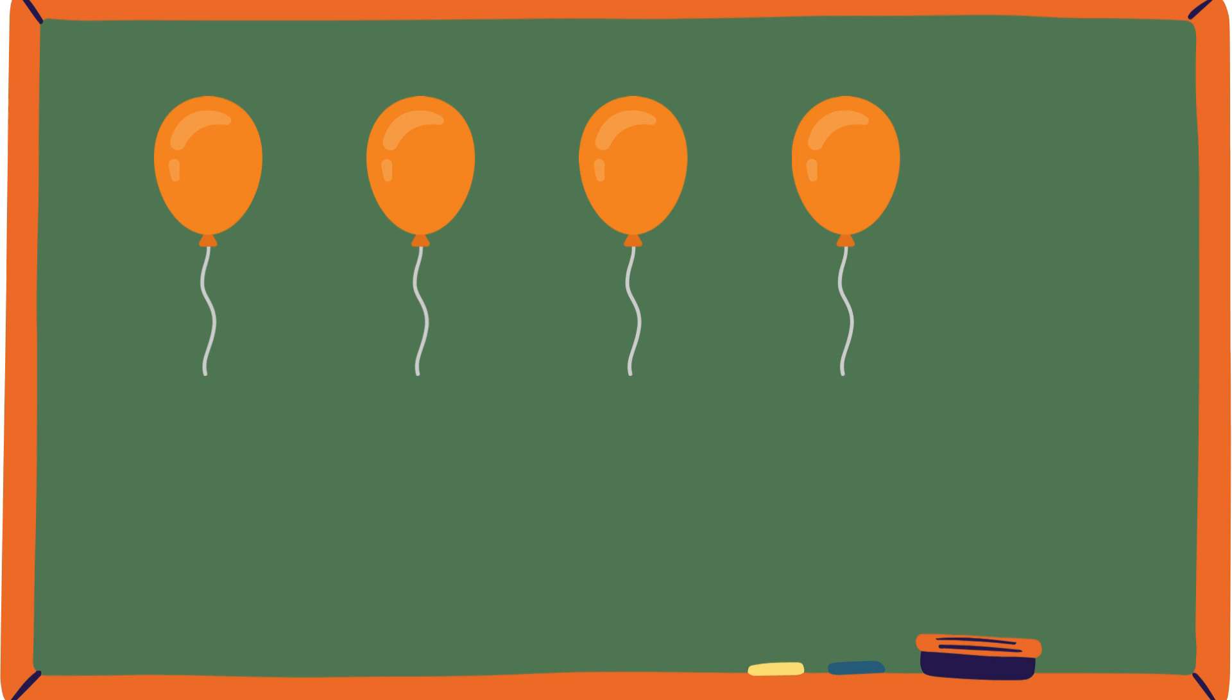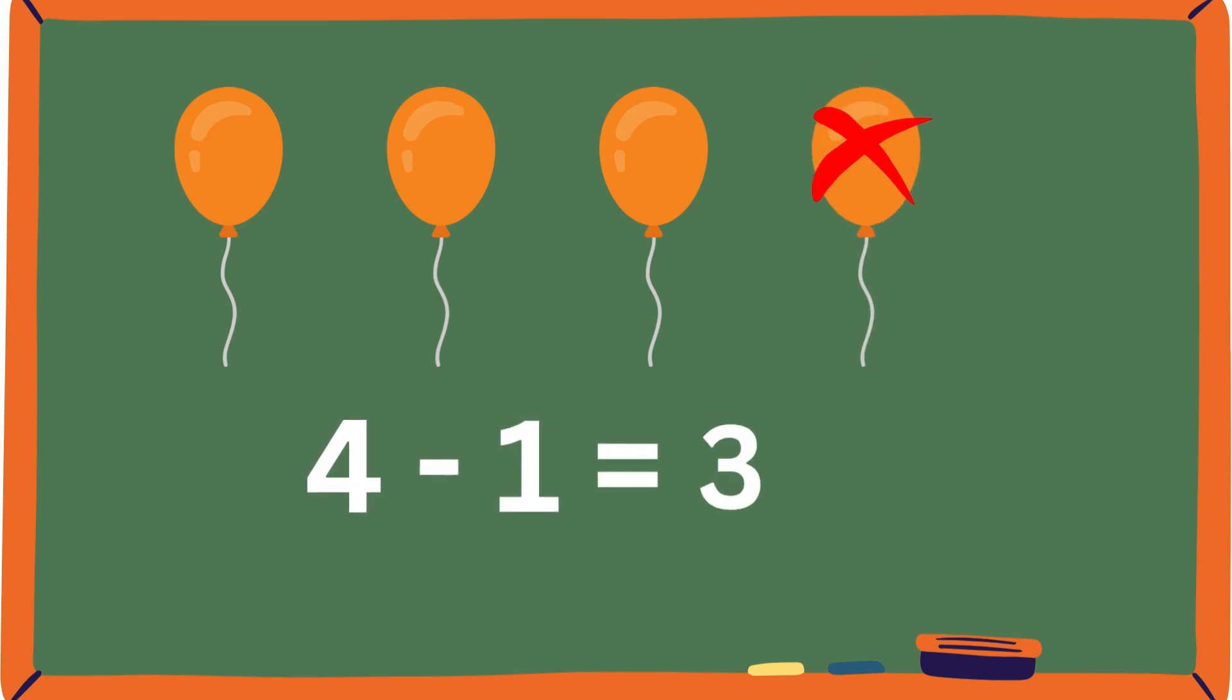So, there are 1, 2, 3, 4 orange balloons. 1 goes away. How many balloons are there? If you said 3, good job! This is the equation for that. 4 minus 1 equals 3.